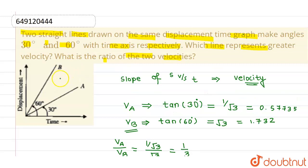So for line B, the velocity is greater. Line B represents greater velocity. This is our answer. I hope you understood. Thank you.